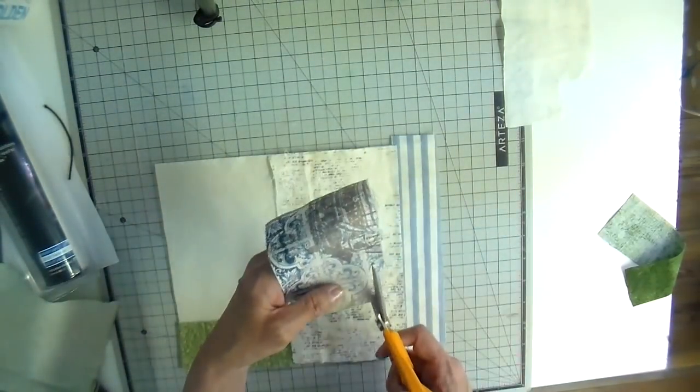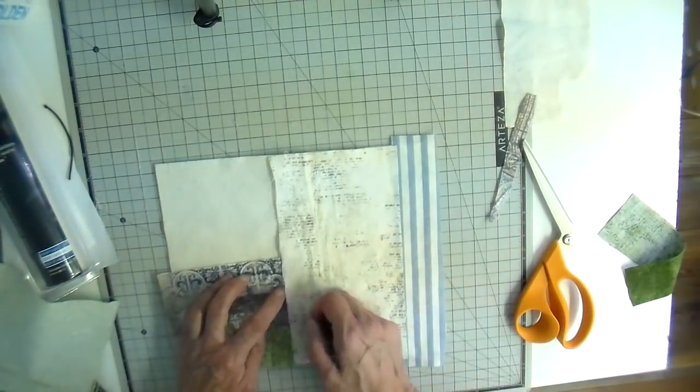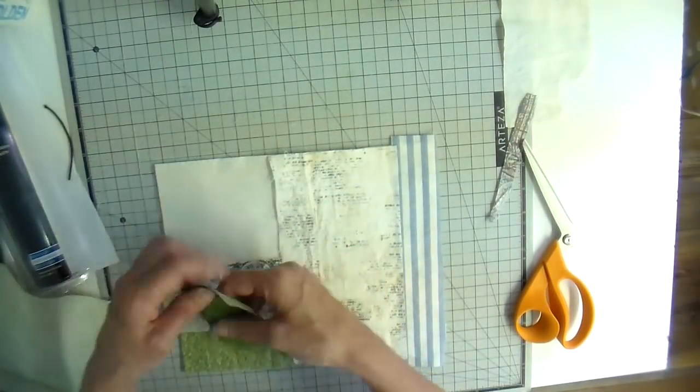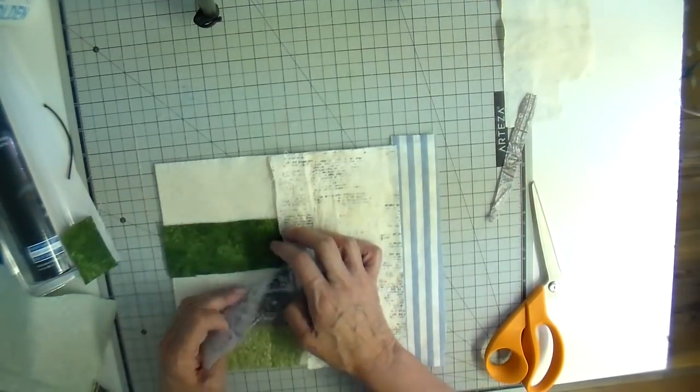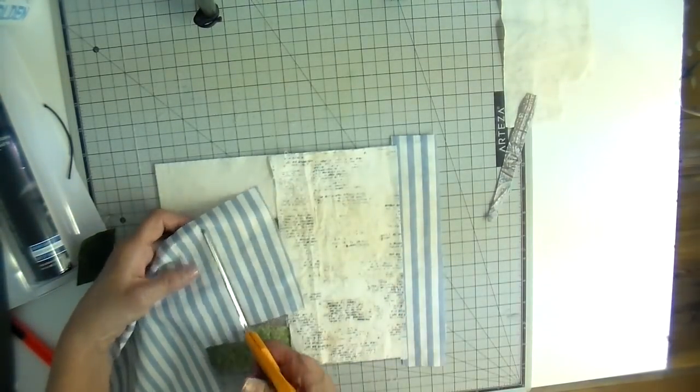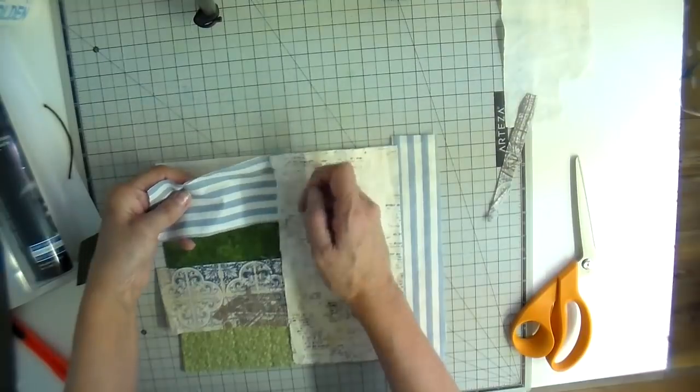And then for this final couple, I do add a darker green, I believe. And then for the very top one, I'm going to be using that same striped cream and blue stripe, only the stripes I'm going to put in the opposite direction.